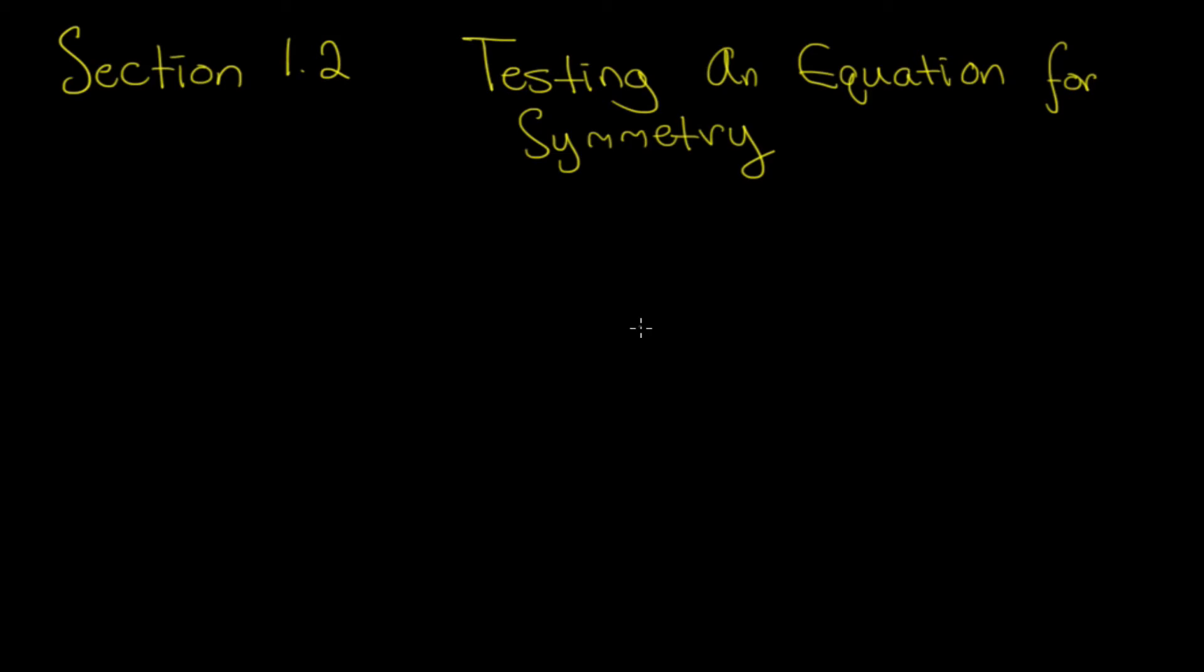We're nearing the end of section 1.2, and we're talking about symmetry with functions. And a function, or a graph I should say, is symmetrical about... There's three types of symmetry with graphs.